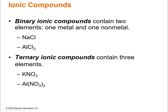We'll start with the ionic compounds. Binary ionic compounds have two elements. Binary, think two. They have one metal and one non-metal. Here we've got NaCl. Na — that's sodium, that's the metal. Cl — that symbol is for chlorine, that's a non-metal.